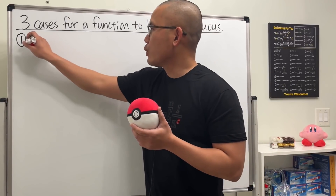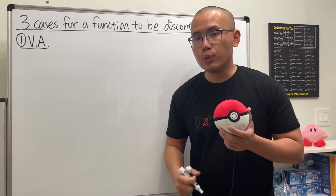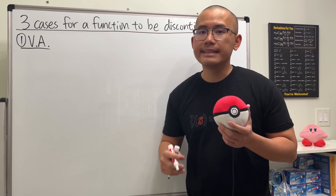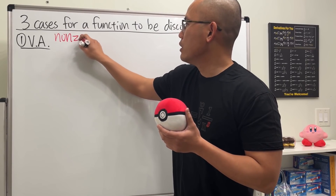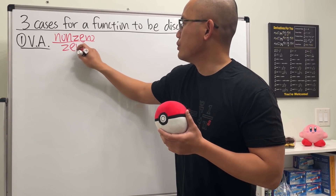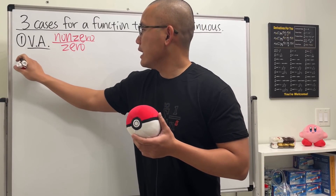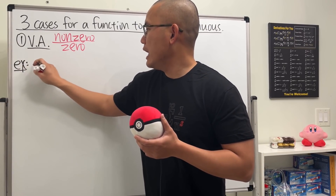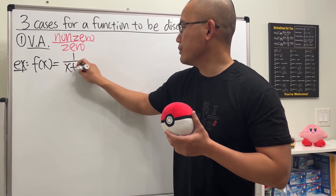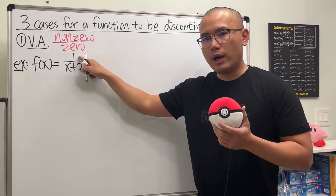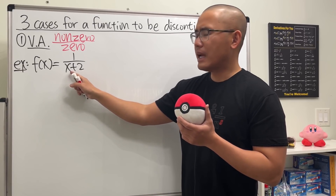The first case is one we've seen back in pre-calc: this is where the function has a vertical asymptote. Suppose we're just working with a rational function. In that case, we have to pay attention to when we have a non-zero over zero situation. Let's say we have a function f of x equal to one over x plus two. We have a one on top which is always non-zero, but how can the bottom be equal to zero?